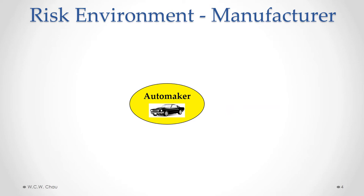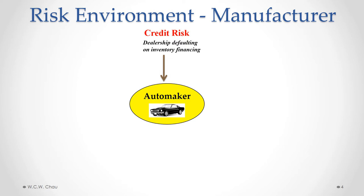Let's look now at the risk environment of a manufacturing business like an automaker — like Ford, Chrysler, or GM. In terms of credit risk, an example for an automaker is where a dealership has defaulted on inventory financing.